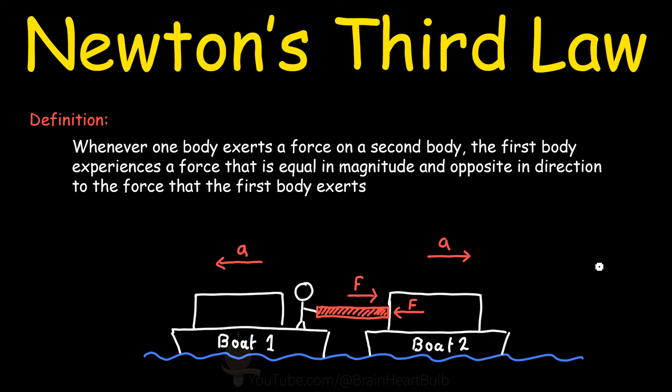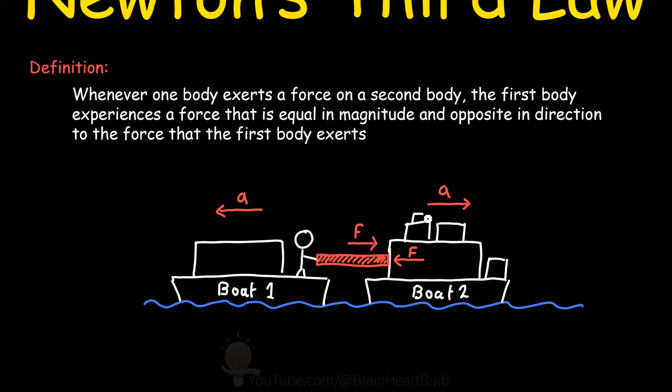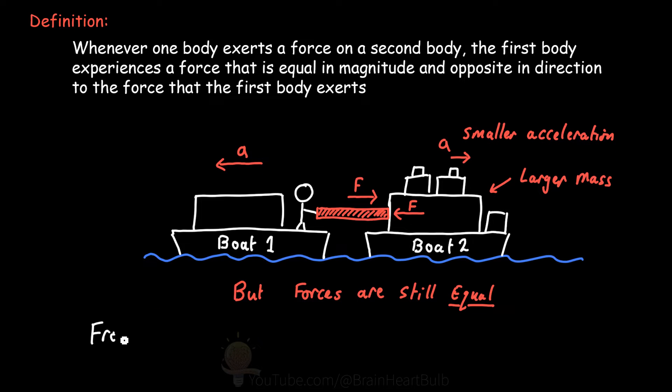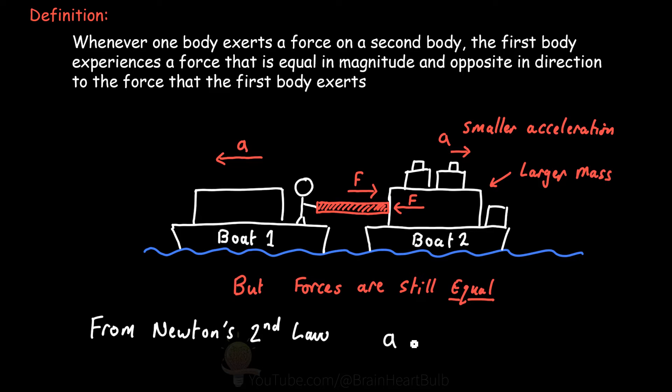But for example, if boat two has more mass than boat one, boat two will have a smaller acceleration compared to boat one. But this doesn't mean the forces on both boats are not equal - they are in fact equal and opposite. It's just that from Newton's second law, the same force will accelerate an inertial mass by differing amounts depending on the size of the mass. The boat with the larger mass will have a lower acceleration.